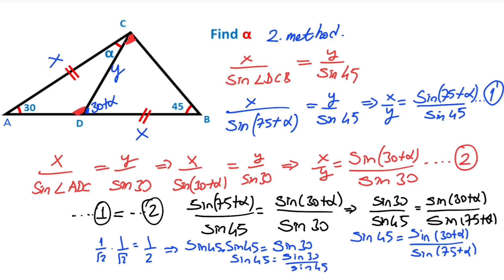We can write sine 45, and since the denominator is 1, we can write sine 90 instead of 1 — the result will not change. Now we can see easily that 90 must equal 75 plus alpha, which means alpha equals 15 degrees.